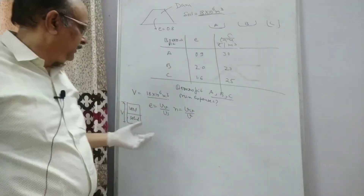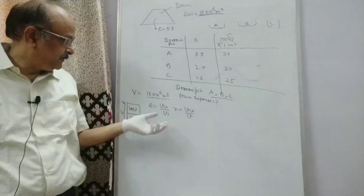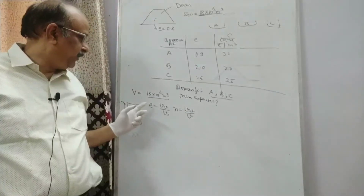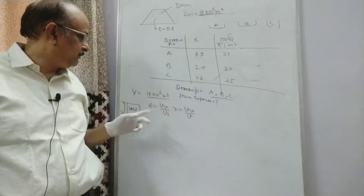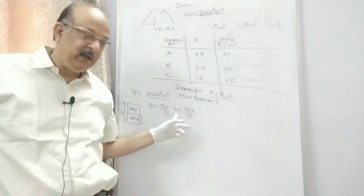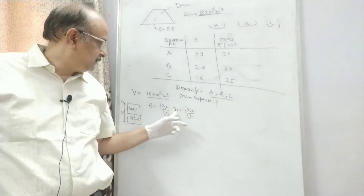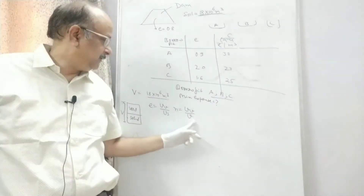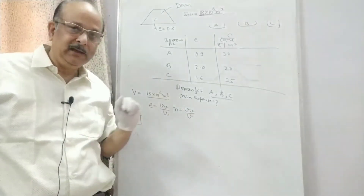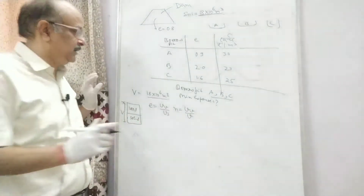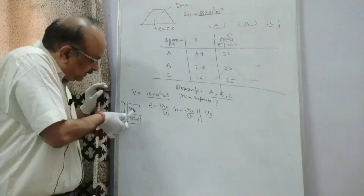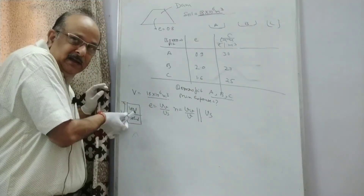Now, if we have been given the void ratio of 0.8, from that we can use the simple formula to find the porosity, and then we will know the volume of the void. Because we know the total volume. Then from that, we will know the volume of the solid. The basic thing is how much is the solid portion of the soil — we want to find this.